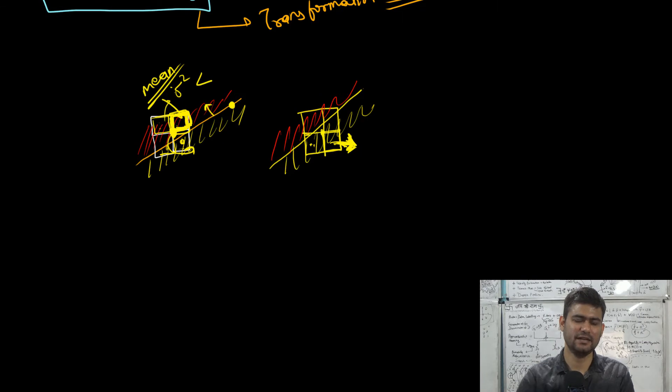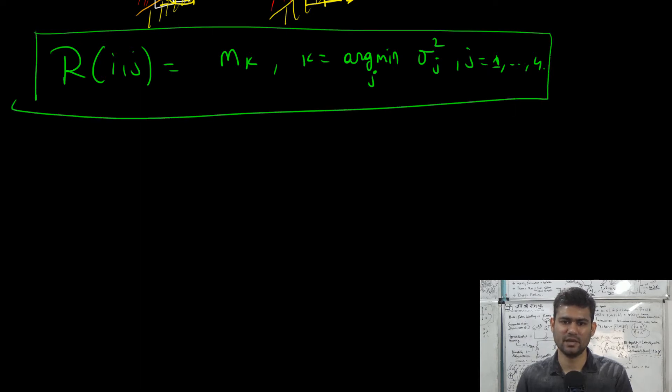Kuwara filter is applied in an iterative fashion, pixel by pixel. So we will have two nested for loops where the transformed pixel values would be given by mk where k is argmin over j sigma squared j for j equal to 1 to 4 for the 4 quadrants. Here we can write mkij to denote that this mean is computed around the regions, around one of the quadrants of pixel i comma j.